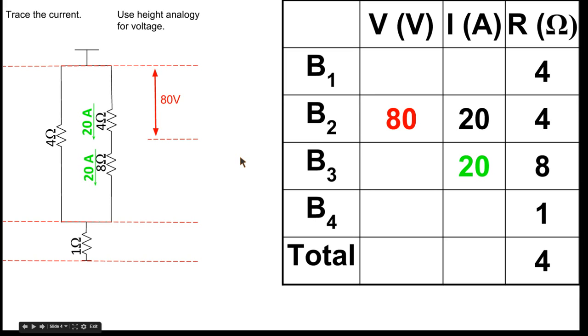Then we know that if I take my 20 and multiply it times my 4, I get a voltage drop of 80 volts. So this height right here, we would call that an 80 volt drop. So we're using our height analogy.